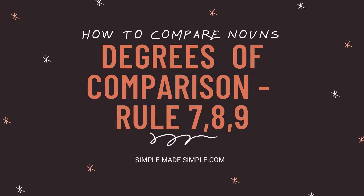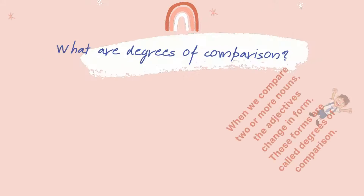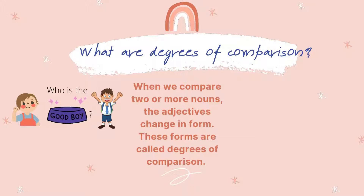Welcome to SimpleMadeSimple.com. We are going to see rules 7, 8 and 9 of degrees of comparison. When we compare things, objects, or people, the adjectives change in form. These forms are called degrees of comparison.